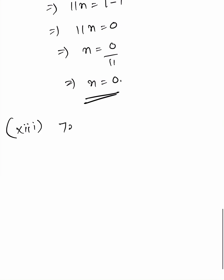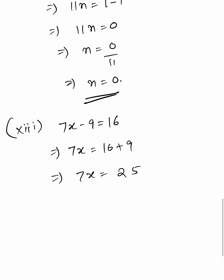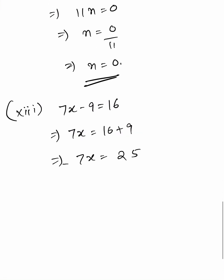Thirteenth: 7x minus 9 equals 16, so 7x equals 16 plus 9, giving 7x equals 25, therefore x equals 25 by 7.